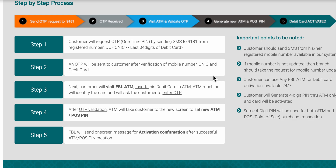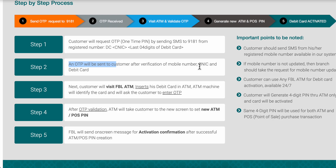How to activate Faisal Bank debit card. The first step is to request the one-time pin by sending an SMS to this number from your registered number. An OTP will be sent to the customer after verification of mobile number, CNIC, and debit card.